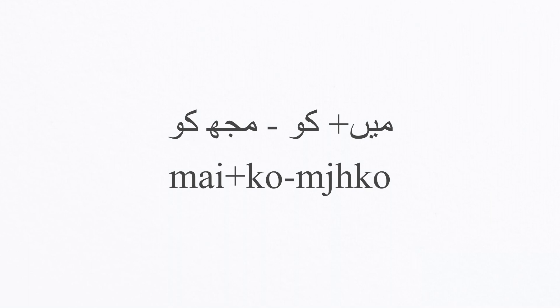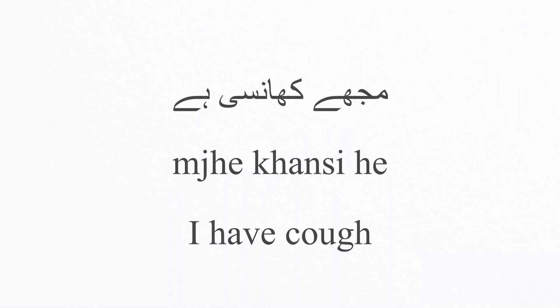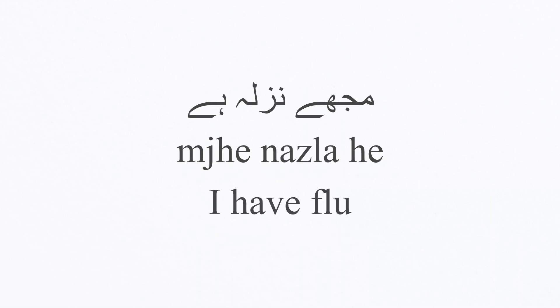So 'mujhko' means 'I have.' 'Mujhko khasi hai' means 'I have a cough.' There's another form, 'mujhe,' which is more colloquial. 'Mujhe khasi hai,' 'mujhe nazla hai' — I have flu. Because 'ko' is a post-position, it's not coming at the end of the sentence; it's attached with the subject.